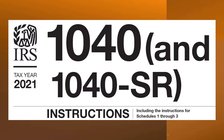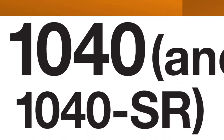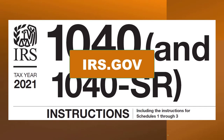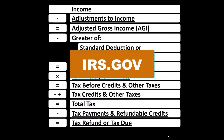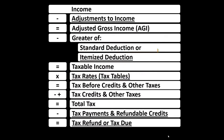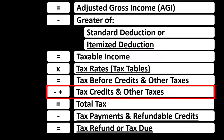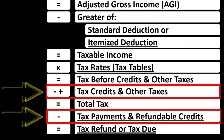Most of this information can be found in the Form 1040 Instructions for Tax Year 2021 on the IRS website, irs.gov. We're down here in the credit area of the income tax formula.